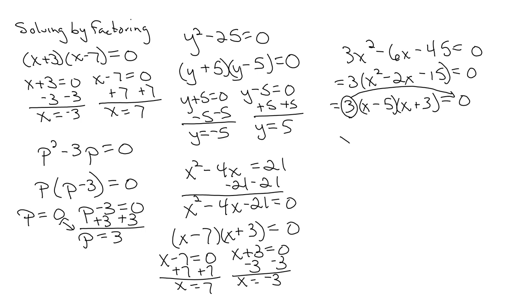So we have (x-5)=0, (x+3)=0. And solve each one. x=5 and x=-3. Okay, so that's solving by factoring.